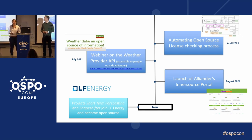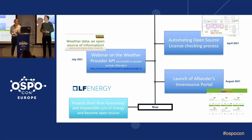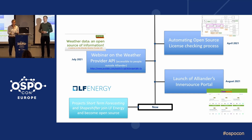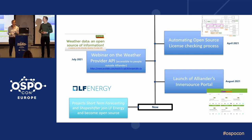Next was a webinar on the weather provider API — a very small tool that we built ourselves and decided to open source ourselves. So far all of our projects had been part of LF Energy, but the weather provider API was something we open sourced ourselves just to try and see what's out there and whether we could do it independently. The footage is on YouTube. We made a lot of new contacts, which was great for the project itself.